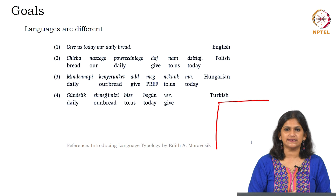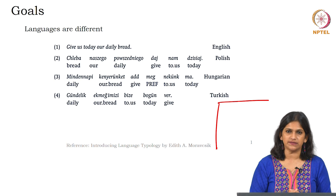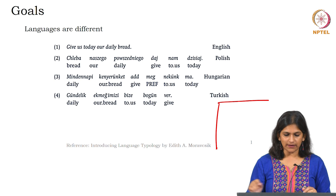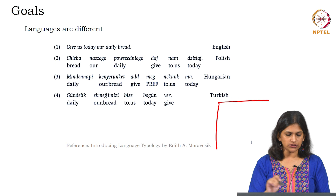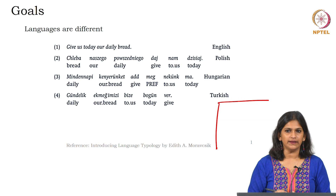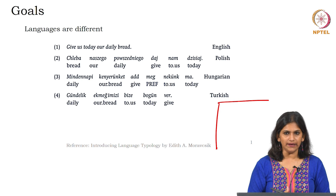On this note, let us have examples from four different languages. I am following empirical data from the book Introducing Language Typology, published by Cambridge University Press, authored by Edith Moravcsik. The four examples are from English, Polish, Hungarian, and Turkish. The word orders are different, and the kinds of phrases used are different — but what is the same? The meaning is the same.